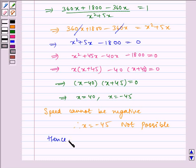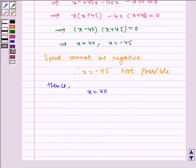Hence, x equals 40. Therefore, the required speed is 40 km per hour.